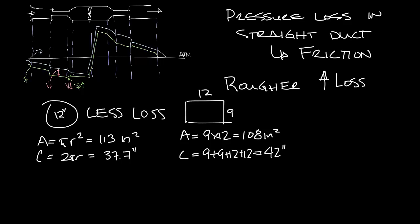Now if you look at the rectangular ductwork, the area is 9 times 12 which is 108 square inches and the perimeter is 9 plus 9 plus 12 plus 12 is 42 inches. So you can see that there's a little less area in the 9 by 12 duct but it has more surface area to interact with the air. So the closer to round or even square you can get, the lower the loss.